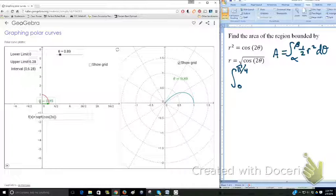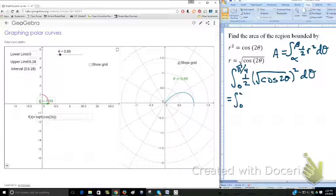Our limits are 0 to pi over 4, which we saw from the curve. We're going to have the 1 half as part of the formula. Now we're going to take the square root of cosine of 2 theta, but we're immediately going to square it, which makes our computation quite a bit easier. So we have the integral from 0 to pi over 4, and we're going to multiply this by 4 to account for the fact that we're only finding a fourth here.